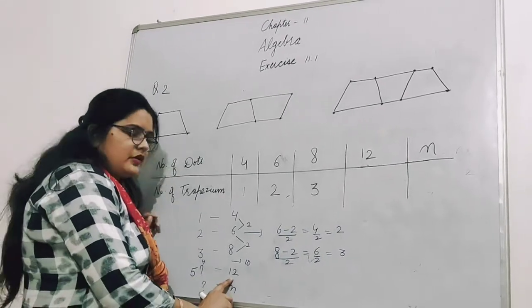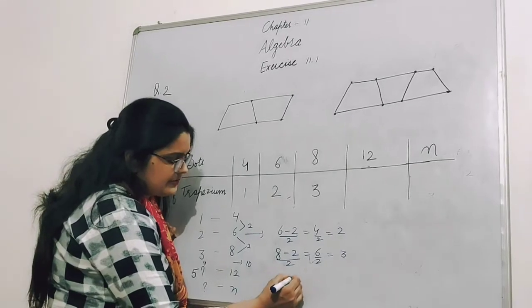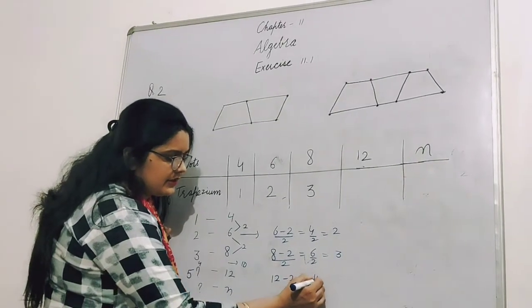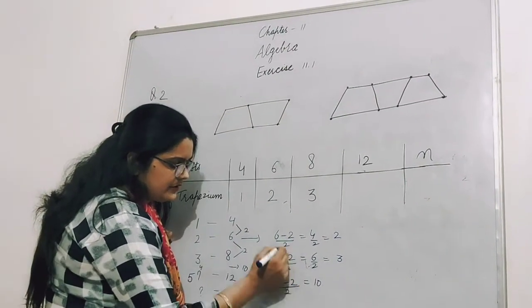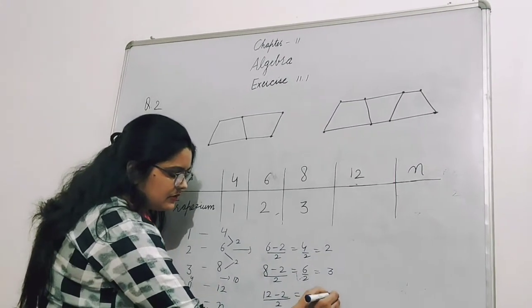This is 12 number of dots. If I minus 2 from 12, I get 10. Divide this by 2 - how many will come? 5.